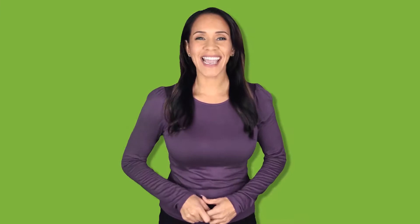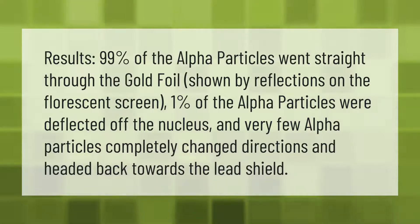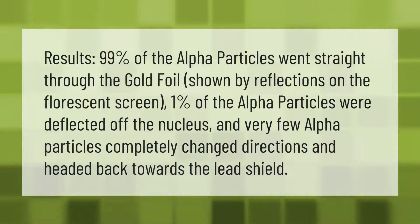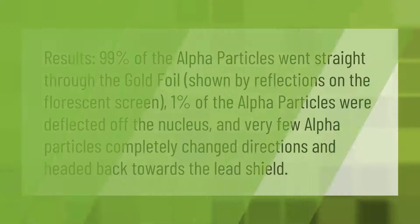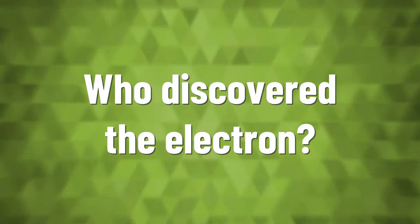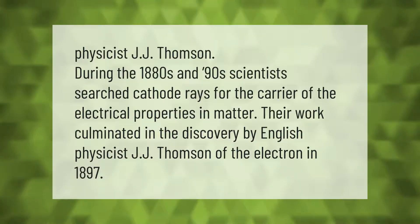Results: 99% of the alpha particles went straight through the gold foil, shown by reflections on the fluorescent screen. One percent of the alpha particles were deflected off the nucleus, and very few alpha particles completely changed directions and headed back towards the lead shield.